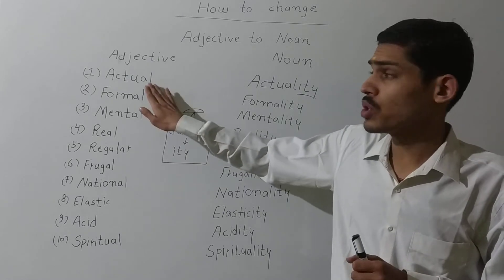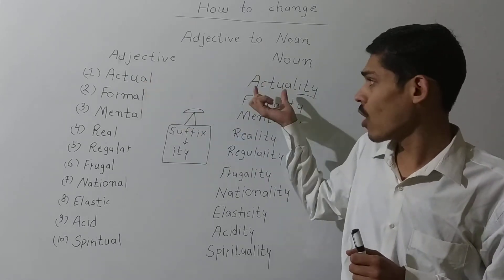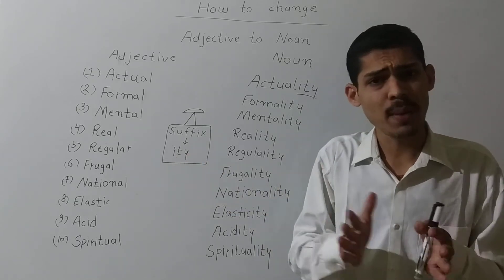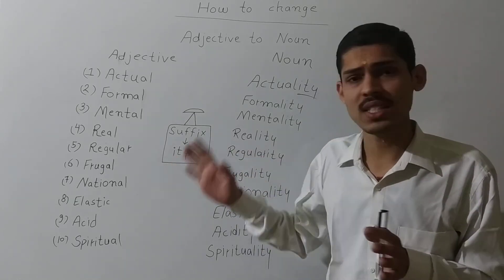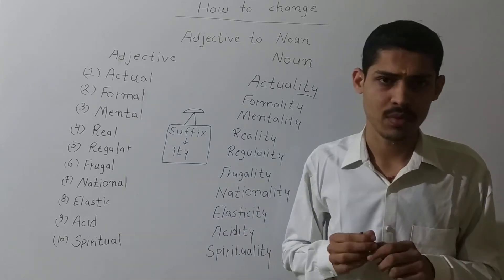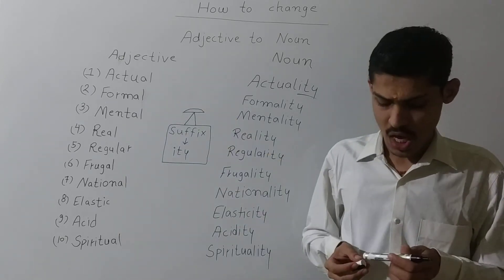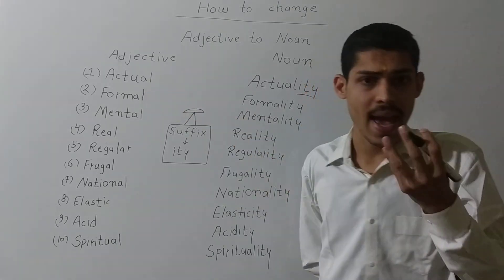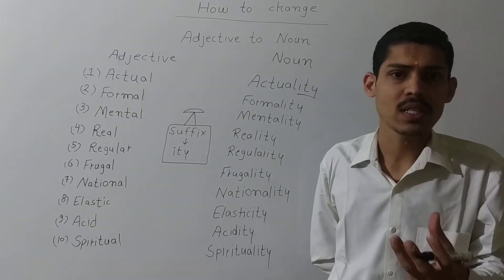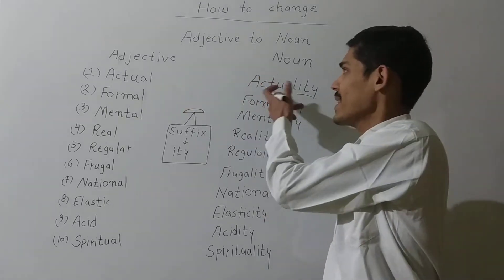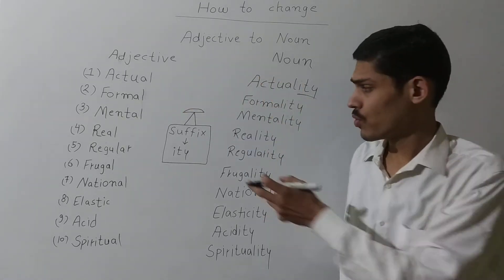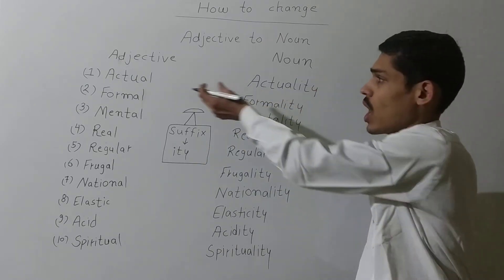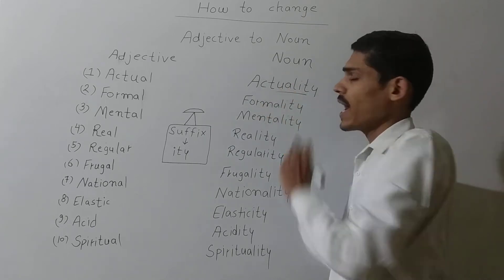If we want to convert it into noun, then we will need one suffix that is I-T-Y. Adjective is actual. Actual means something which is real. Now if we want to convert it into noun, we will need I-T-Y, that is suffix. So we will add at the end of the sentence. Actual, actuality.